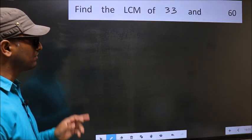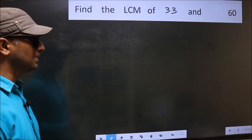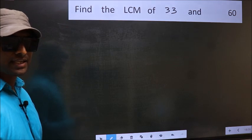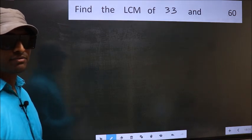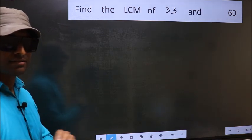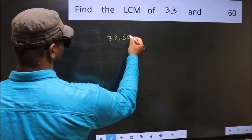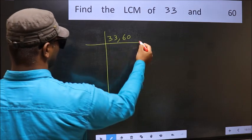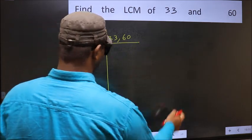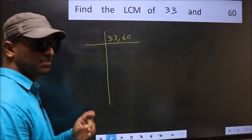Find the LCM of 33 and 60. To find the LCM, we should frame it in this way: 33, 60. This is your step 1.